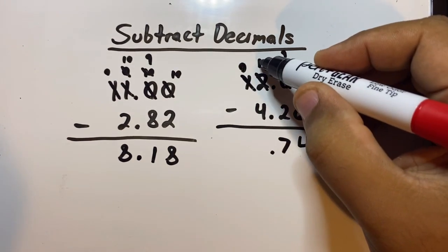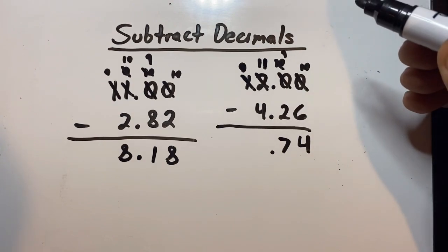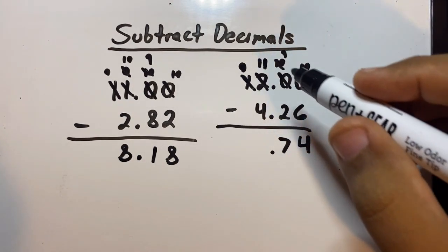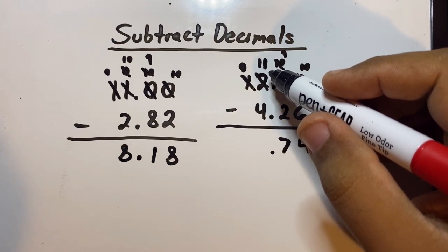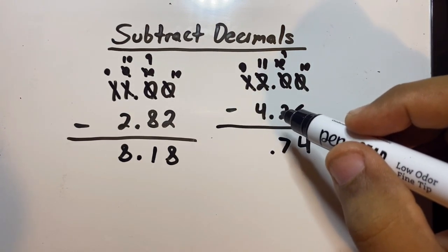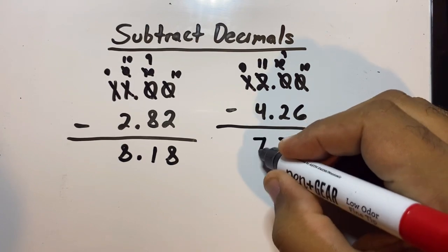So now we do 11 minus 4. 11, 10, 9, 8, so that'll give us 7. You see, it's not that difficult kiddos, and I know you can do it.